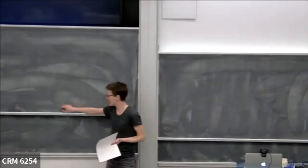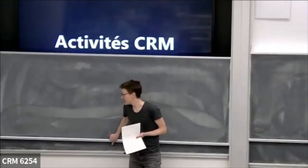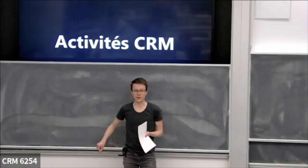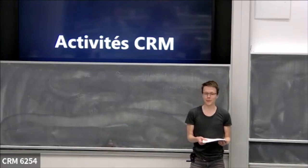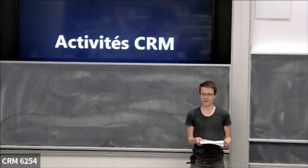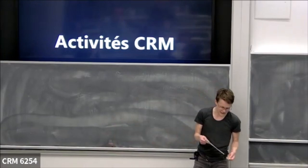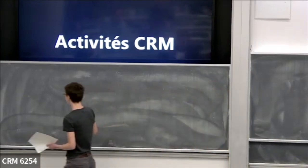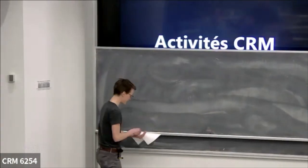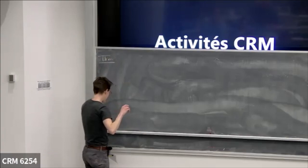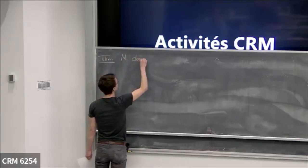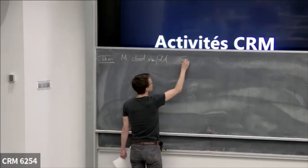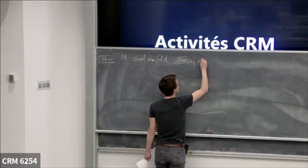This lecture will be in some sense independent of the first lecture in that we're just going to state and prove a theorem, so it's self-contained. But as you will see, there will be some tricks that will seem more familiar because you've had practice with them. The theorem is as follows: take M any closed manifold and G any separable topological group.